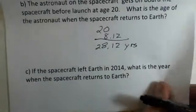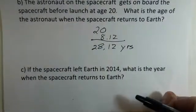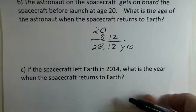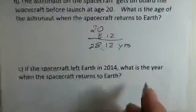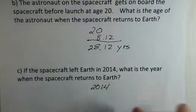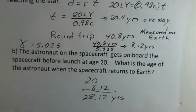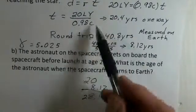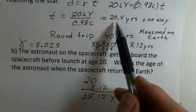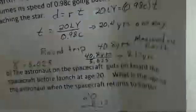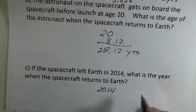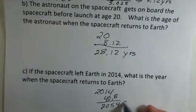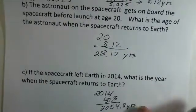So the spacecraft, let's say, leaves the Earth in 2014. What's the year when the spacecraft returns to Earth? What do the Earth clocks read? Well, 2014, and up above, we calculated from the Earth's view, the distance is 40.8 years, the spacecraft traveling at point 8c. So 20 years one way, a little over 40 years round trip. We need to add 40 years to this date. So 2054.8 would be the calendar if we left on January 1st, 2014.